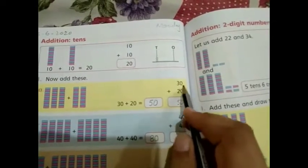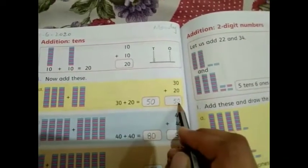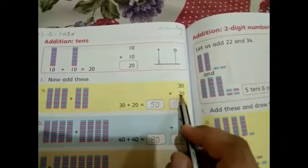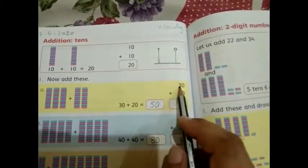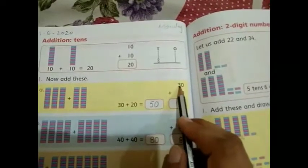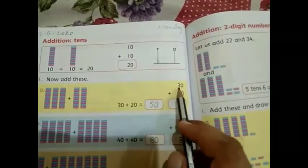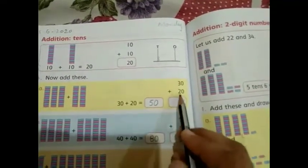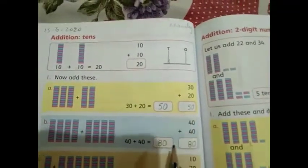In ones, there are 2 zeros. 0 plus 0 is equal to 0. Now add tens. In the tens column, there are 2 numbers which are 3 and 2. 3 plus 2 is equal to 5. So 30 plus 20 is equal to 50.